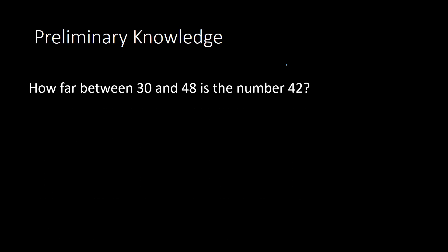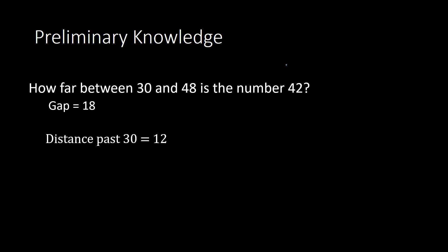One more example: how far between 30 and 48 is the number 42? I find the gap between 30 and 48 by subtracting 48 minus 30 to get 18. Then I see how far past 30 is 42: 42 minus 30 gives me 12. I take 12 divided by the gap of 18, which can reduce, and I get my solution of 2 over 3.